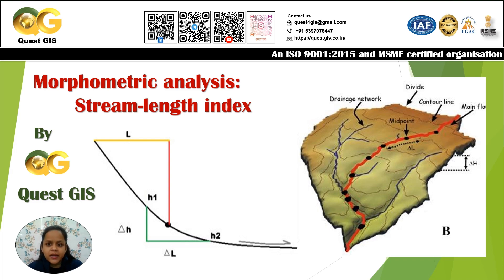The SL Index is one of the morphometric parameters — or morphometric indices — which is widely used in understanding the dynamics and behavior of a river or a drainage network. Before going into the detail of SL Index, it's important that we understand what exactly morphometric parameters are in general.